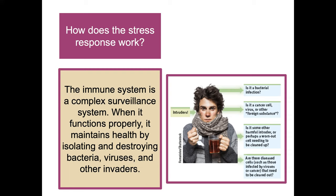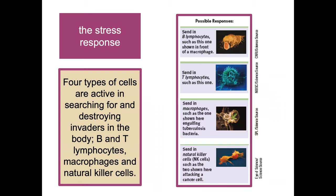Is the intruder a bacterial infection, a cancer cell, or some other harmful intruder? Are there disease cells that need to be cleared out? Four types of cells are activated in searching for and destroying invaders in the body: B and T lymphocytes, macrophages, and natural killer cells.